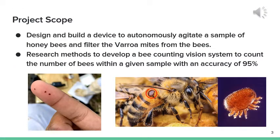The scope of our project was to design and build a device to autonomously agitate a sample of honeybees and filter the viral mites from those bees. We are also tasked with designing a bee counting vision system to count the number of bees within a given sample with an accuracy of at least 95%.